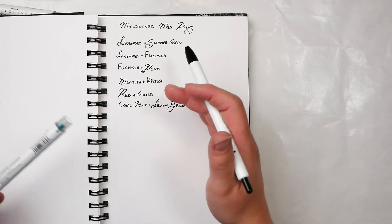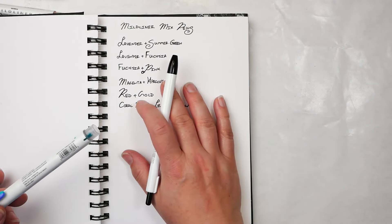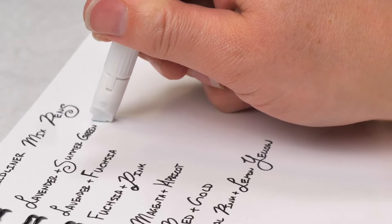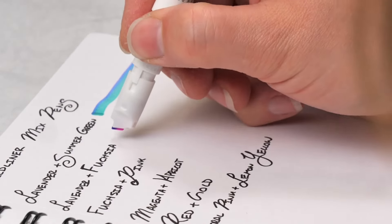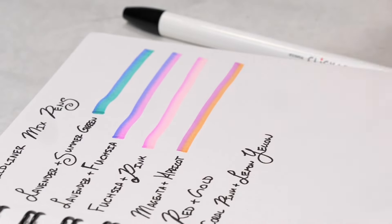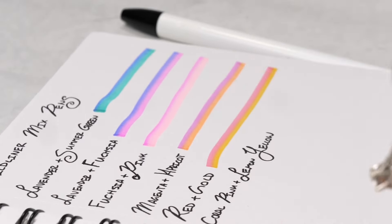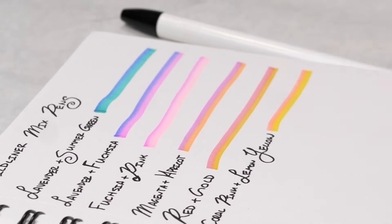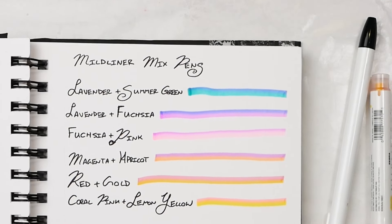And the more we push the better color we're getting. So before I ever use these in a project, I always try to create a sample in my book. We're gonna start with the lavender and summer green, lavender and fuchsia, fuchsia and pink. This is magenta and apricot. We have a red and gold and the coral pink and lemon yellow, and look how amazing these colors are.